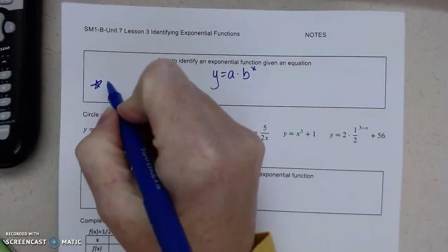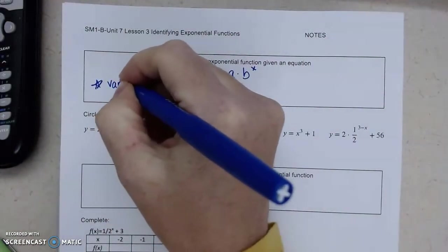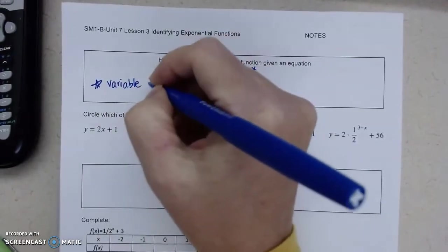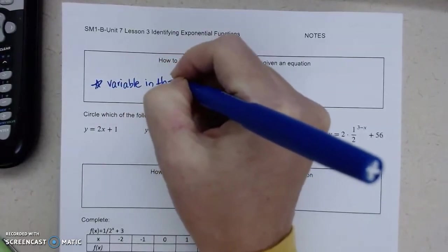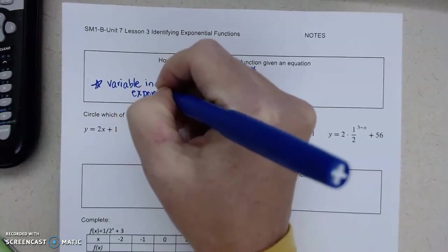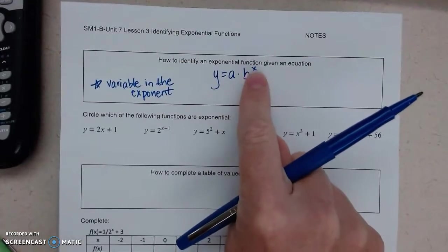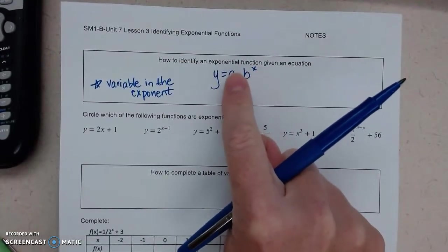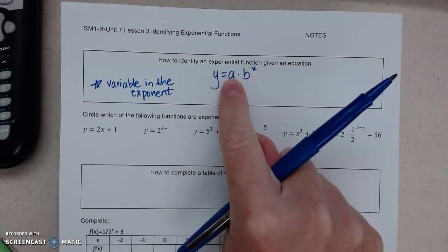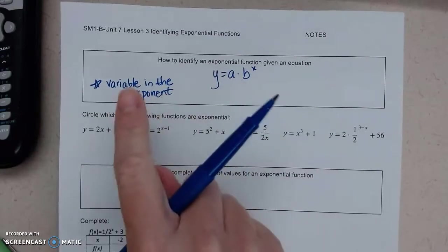What you'll notice is there's always going to be a variable in the exponent. There can be fractions or numbers, but there's going to be one variable and it's always going to be written in the exponent. The a is not required, it doesn't have to be there, but that is your key.